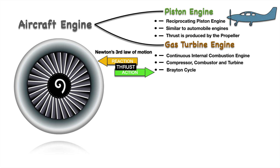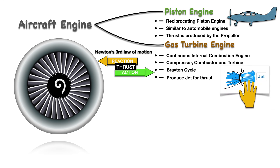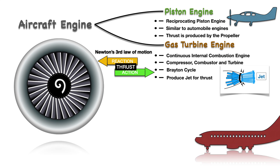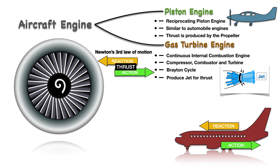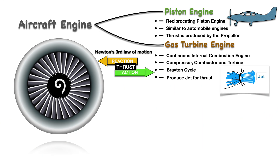Gas turbine engines produce thrust with the help of a jet. To understand the concept of jet, take an example of a tube with a nozzle. When high energy and expanded fluid, whether liquid or gas, is forced to leave a small nozzle, a jet is produced. This jet will be the action and, as a reaction, the aircraft will move forward.